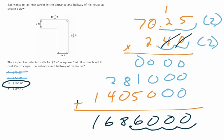Just making sure you solve for the composite shape, composite area, I'm sorry, in feet. And then, multiplied it by $2.40 to figure out what the total cost for square foot of carpeting this entrance and hallway.